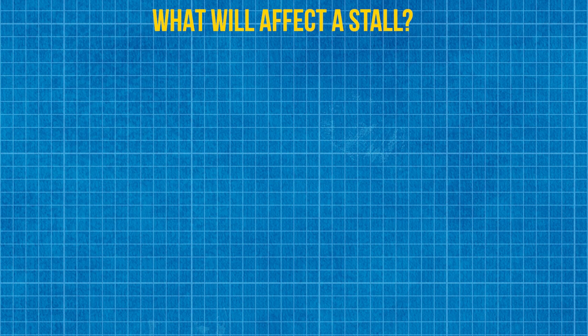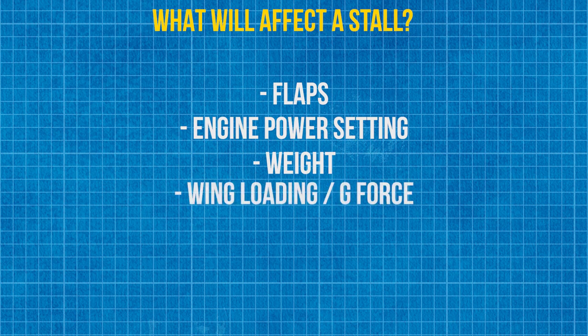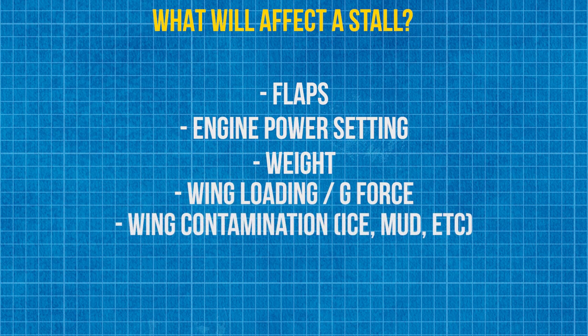Theoretically you can stall at any speed — it is all down to the angle of attack. There are some factors which can affect a stall. These can be whether you have the flaps extended or retracted, your power setting can alter your stall speed, and the weight of your aircraft may impact the speed at which the aircraft will stall. The g-forces and load factor on the aircraft are another effect, as well as possible icing or wing contamination causing the airflow to break up before it technically should.